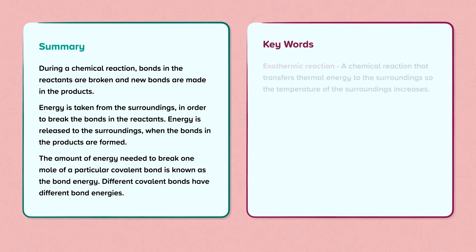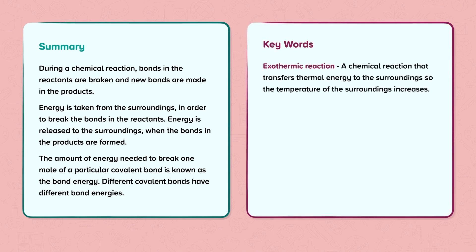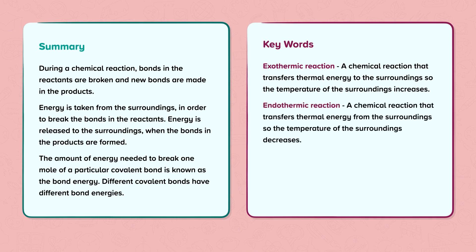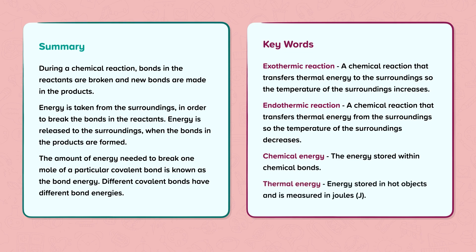Key words: Exothermic reaction — a chemical reaction that transfers thermal energy to the surroundings so the temperature of the surroundings increases. Endothermic reaction — a chemical reaction that transfers thermal energy from the surroundings so the temperature of the surroundings decreases. Chemical energy — the energy stored within chemical bonds. Thermal energy — energy stored in hot objects, measured in joules.